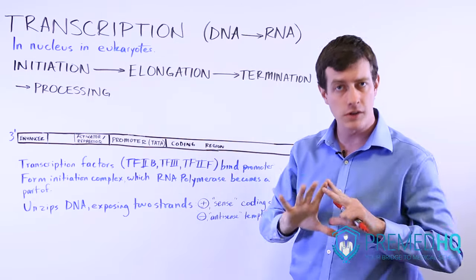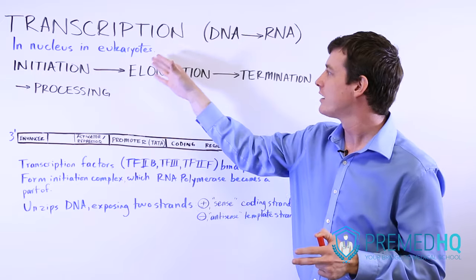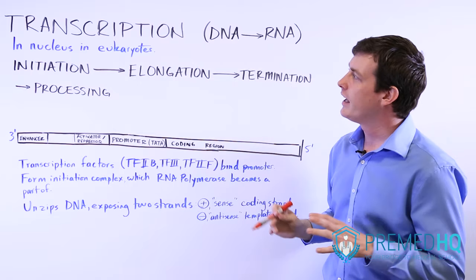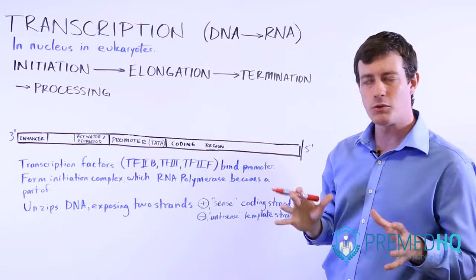Obviously in prokaryotes there is no nucleus, so that occurs in the cytoplasm. But in eukaryotic cells, the transcription process occurs in the nucleus. And like many other processes, transcription is divided into three phases.